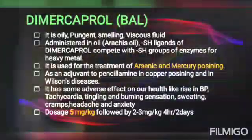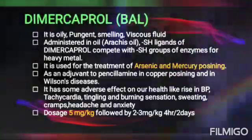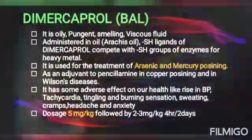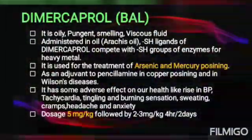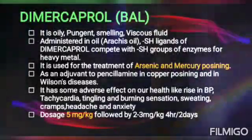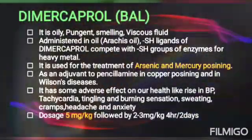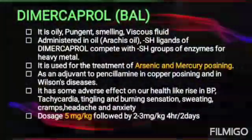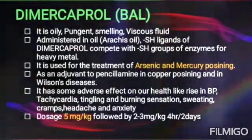Coming to the first drug, dimercaprol, it is used against arsenic, mercury, and copper. It was synthesized during World War II by British scientists as an antidote to arsenic-based gas lewisite. It is an oily, pungent-smelling, and viscous fluid, administered in oil. The sulfhydryl ligands of dimercaprol compete with the sulfhydryl groups of enzymes for heavy metals like arsenic, mercury, and copper. It is used for treatment of arsenic and mercury poisoning, as an adjuvant to penicillamine in copper poisoning, and also in Wilson's disease. Adverse effects include rise in BP, tachycardia, tingling and burning sensation, sweating, cramps, headache, and anxiety. Dimercaprol forms a metal complex which is stable and excreted in the urine. The dosage is 5 mg/kg followed by 2-3 mg/kg for 2 days.